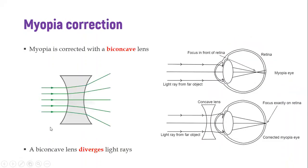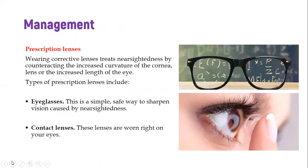The correction of myopia is by use of a biconcave lens, which bends and diverges the light. By diverging the light slightly, by the time it hits the cornea's convex lens, the focal point is pushed back so that convergence actually occurs at the retina. This concept is used in prescription eyeglasses and contact lenses — a simple and safe way to sharpen the vision.